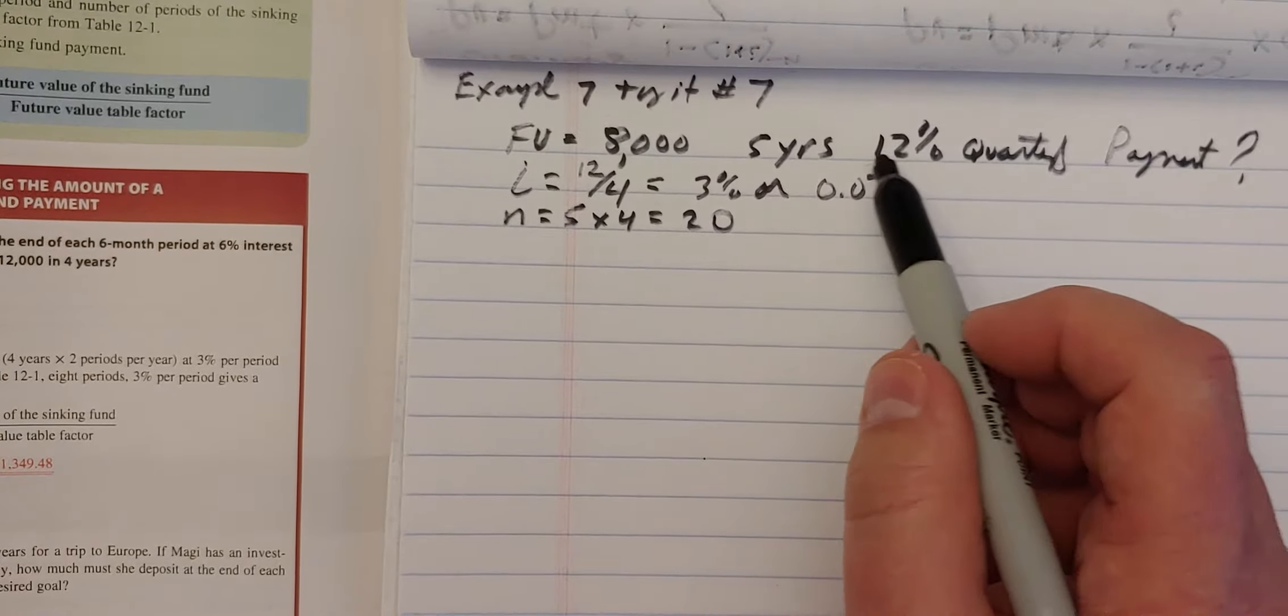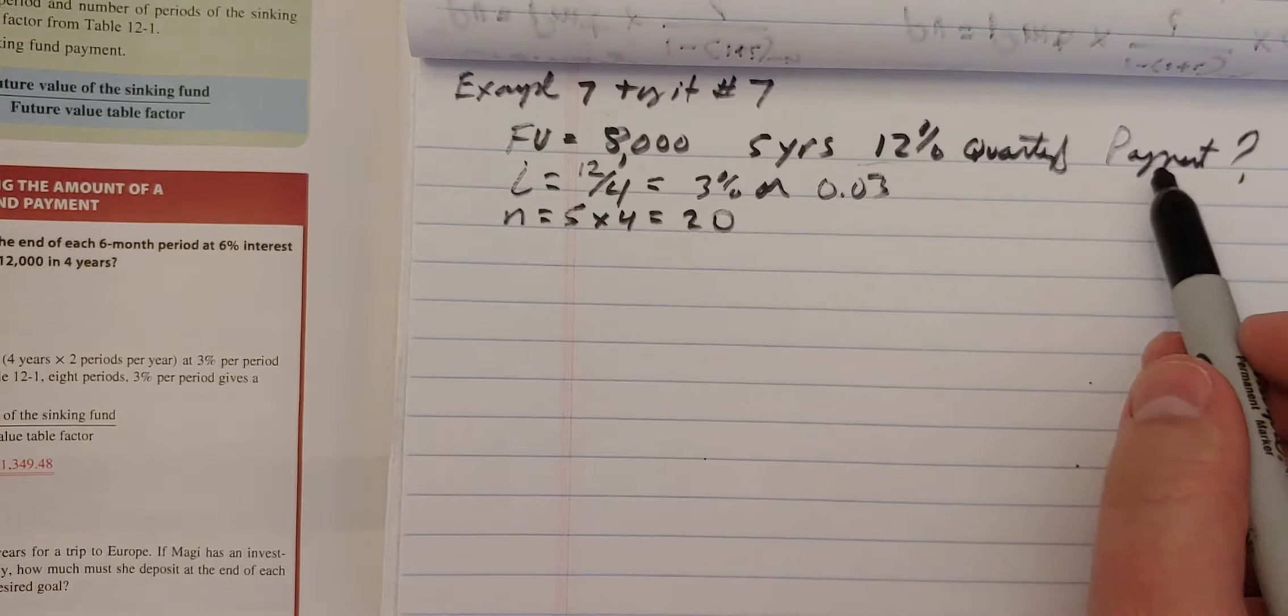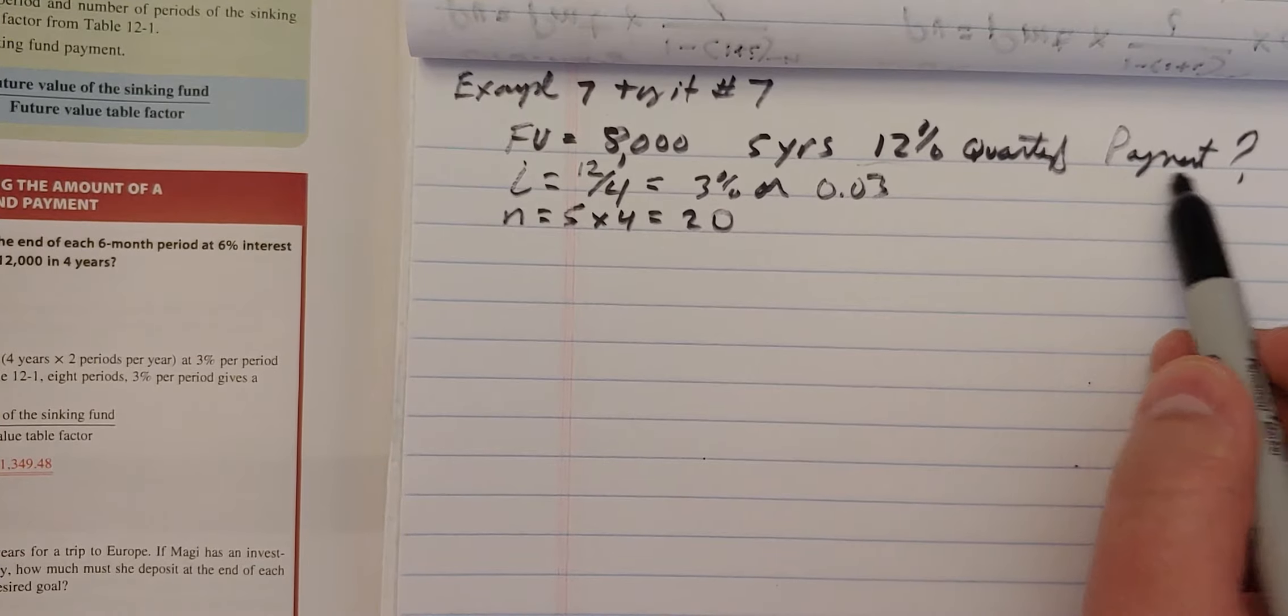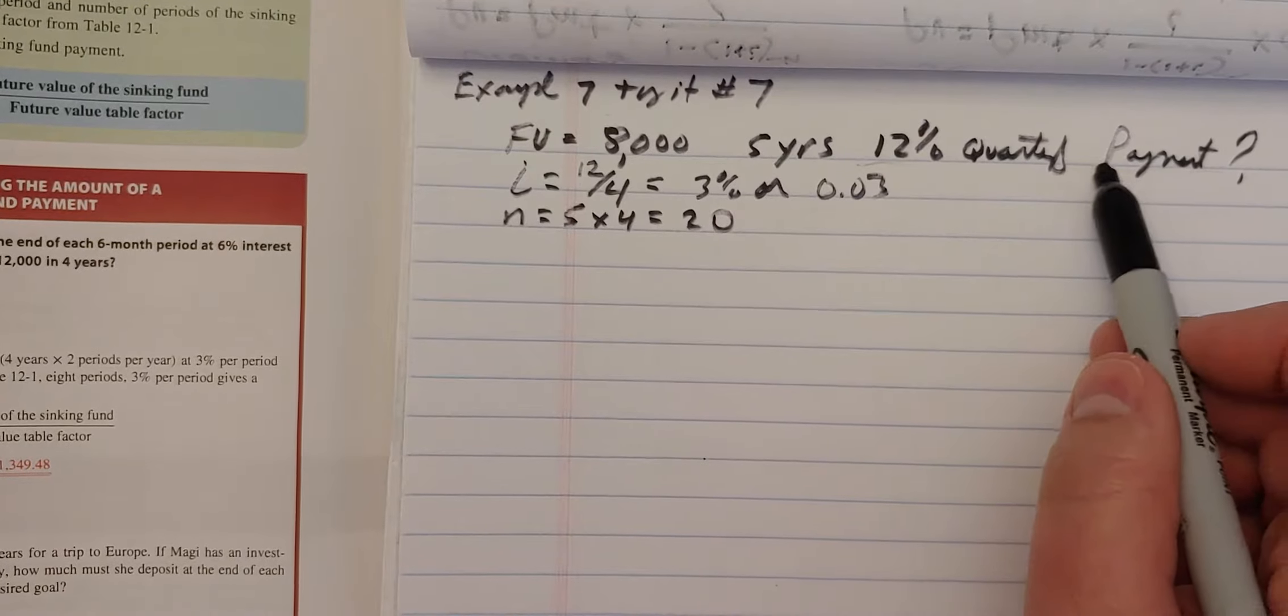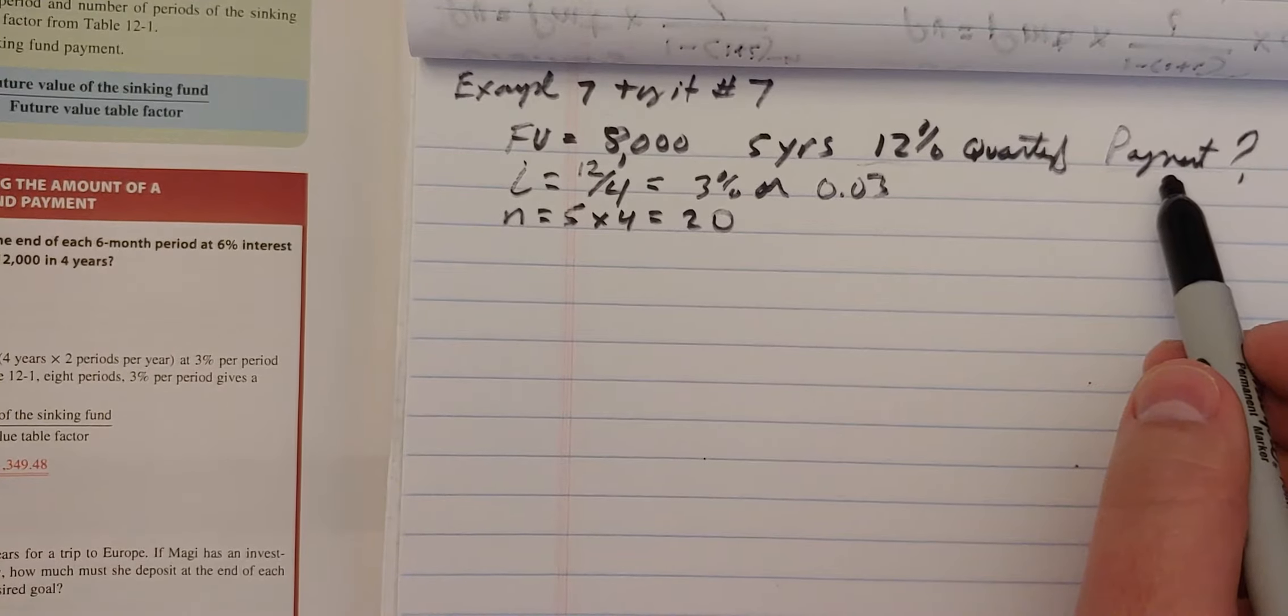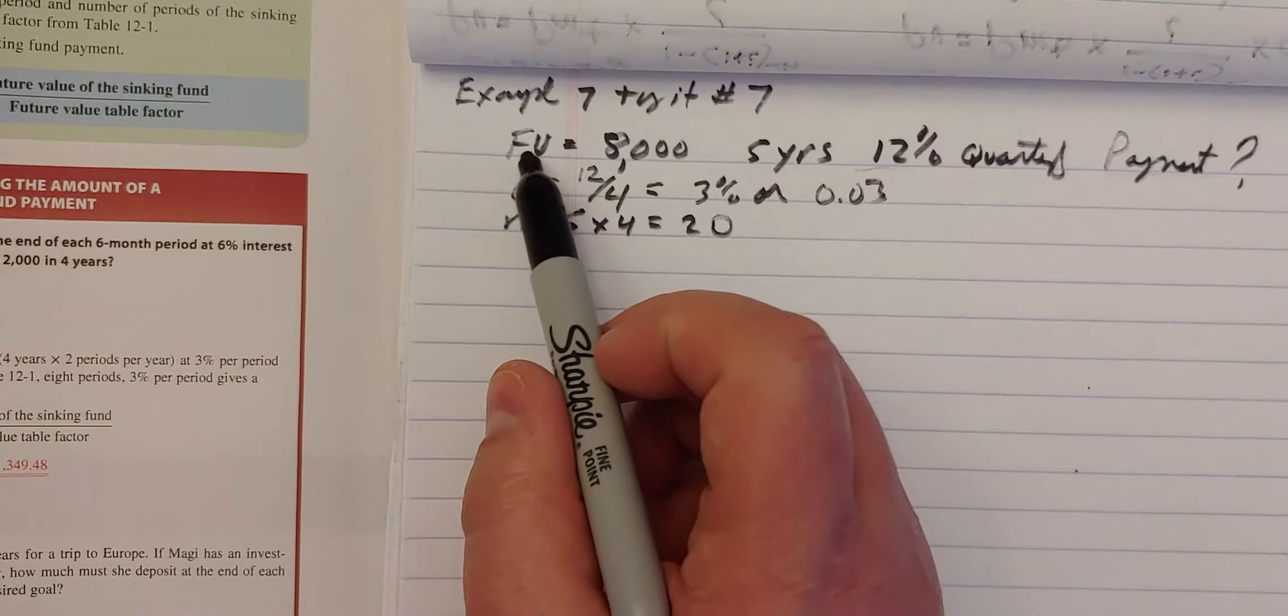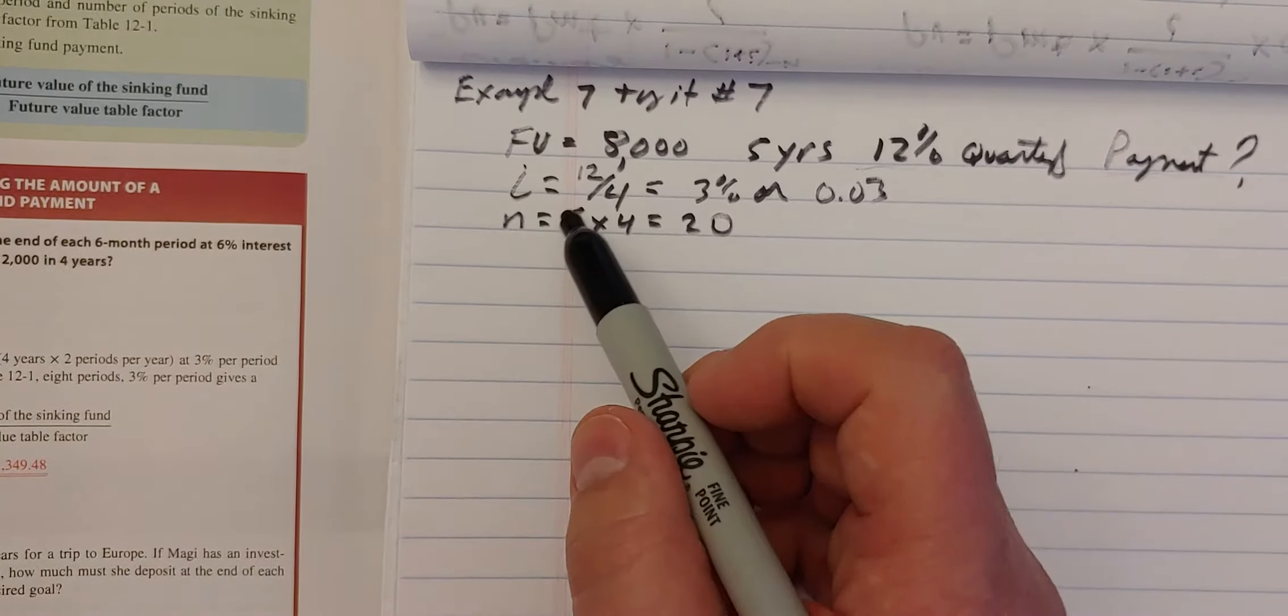Man, that's great, 12%. I don't know where you find that. But I would go with it. And it's asked, what does she have to put away every three months? We don't know what the payment is. So as soon as they're asking you what the payment is, we know that it's either a sinking fund or an amortization. And since they gave us the future value, we know that it's a sinking fund.